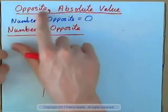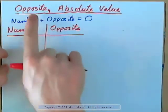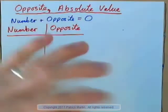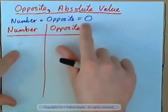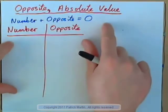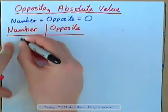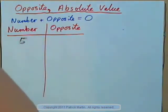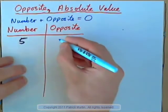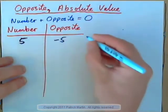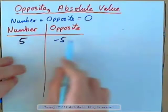Let's see if we can work with opposite and absolute value. First, we'll start with opposite. What does that mean? Well, a number added to its opposite gives 0. We've already covered adding positives and negatives. So if a number was 5, for example, then its opposite would be negative 5, because 5 plus negative 5 gives 0. If you add these together, you get 0, right?